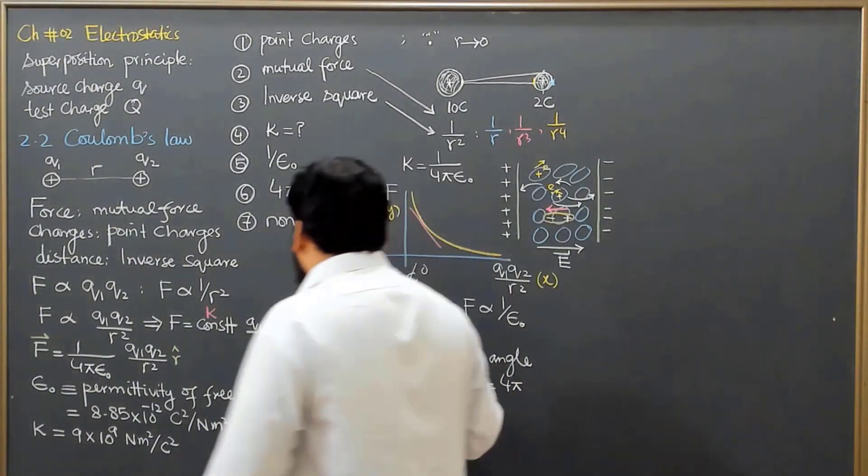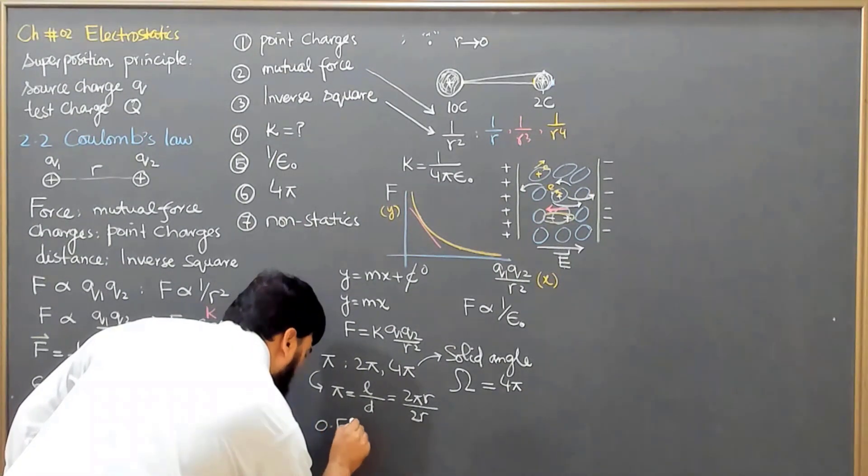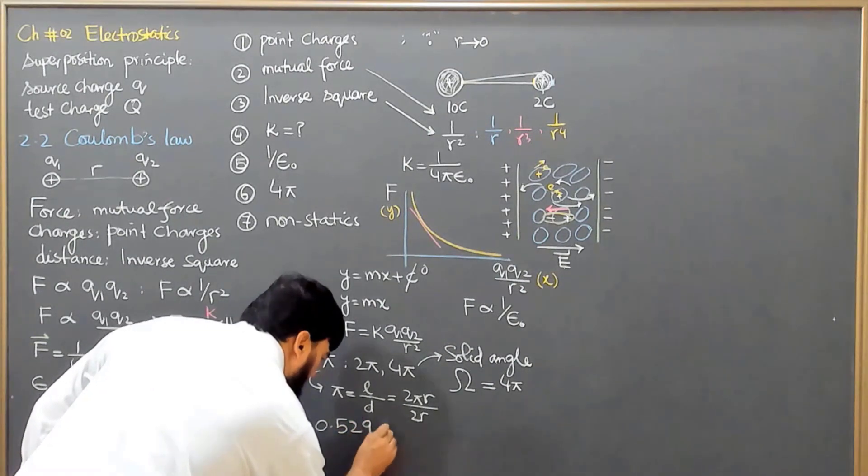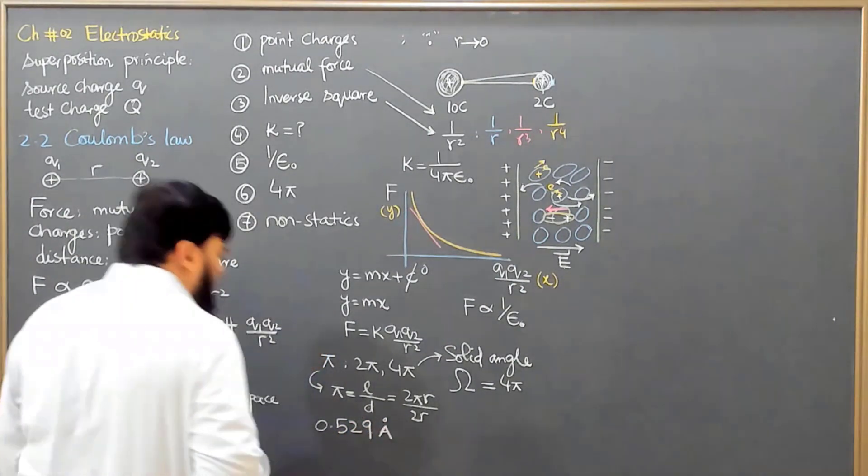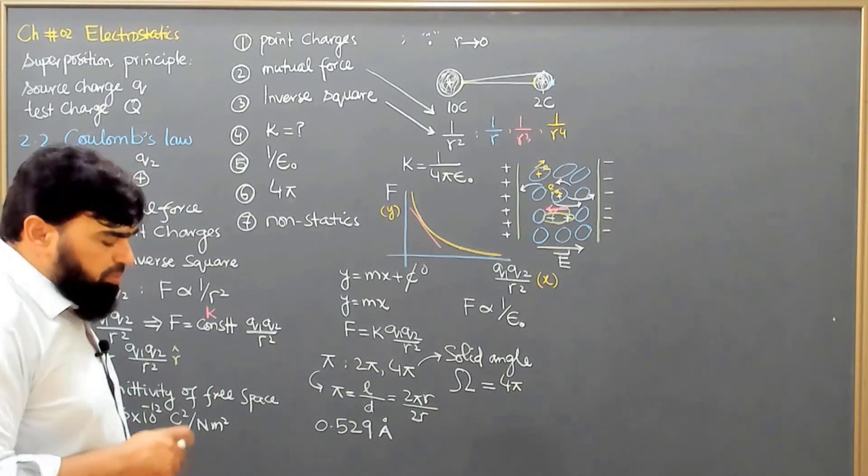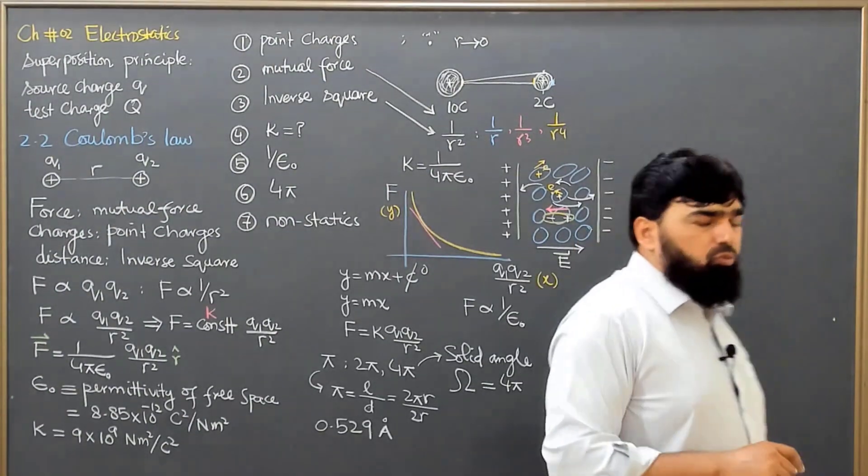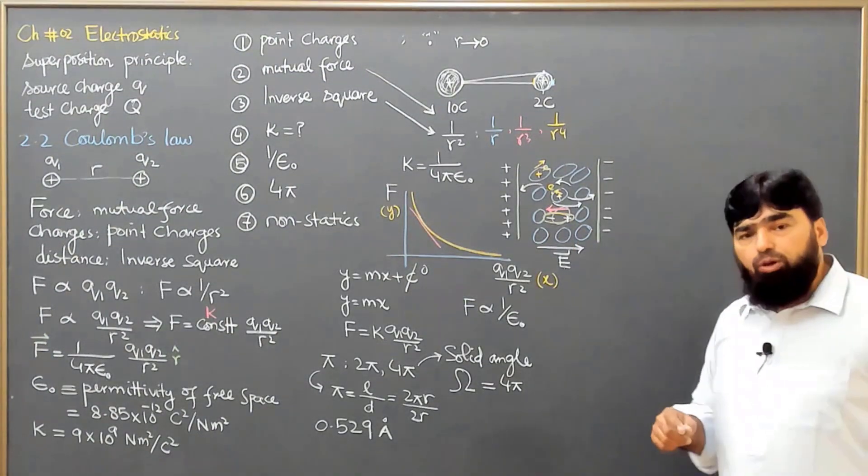And that radius comes out to be 0.529 angstrom. When Bohr calculated this one, miraculously this thing is very accurate.